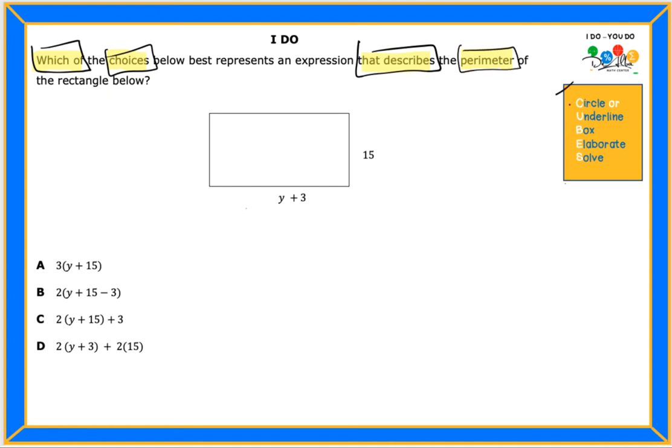The circle, underline, box. For elaborate, I like that I have a picture. So what I'm gonna do is identify the parts of my rectangle so I can get to the perimeter. Now I'm gonna remember what perimeter is.